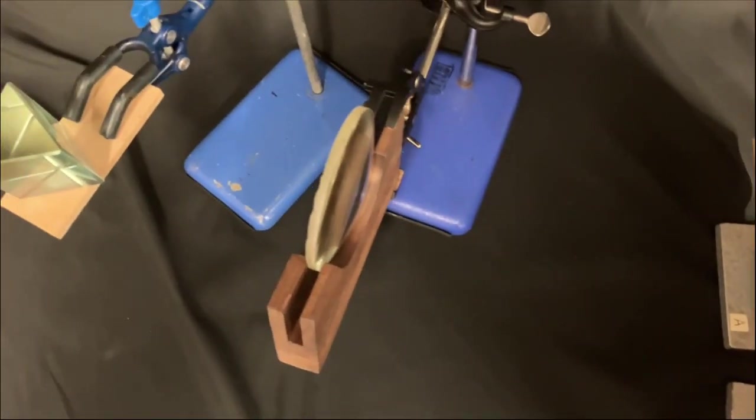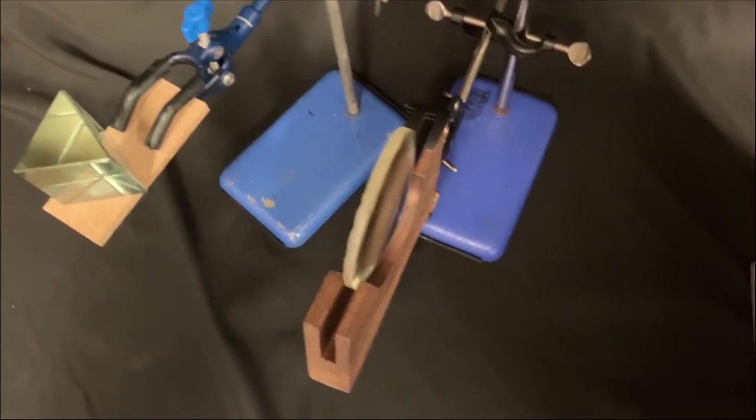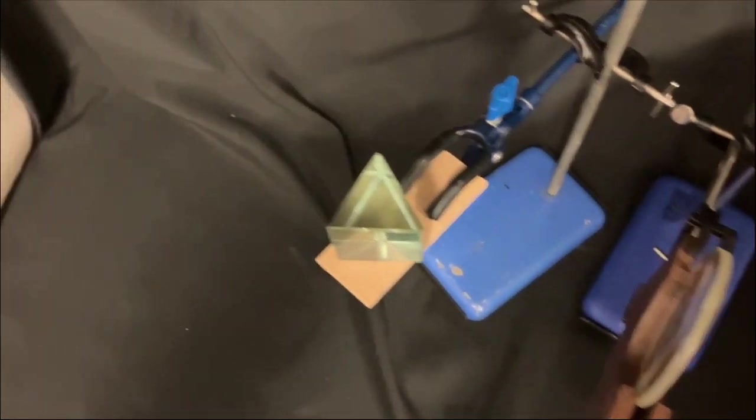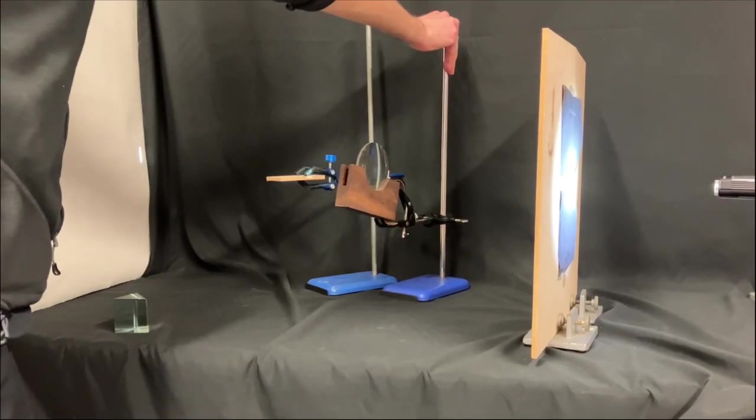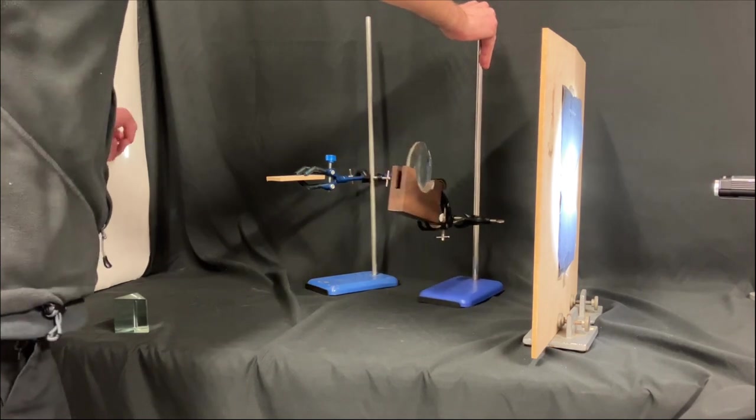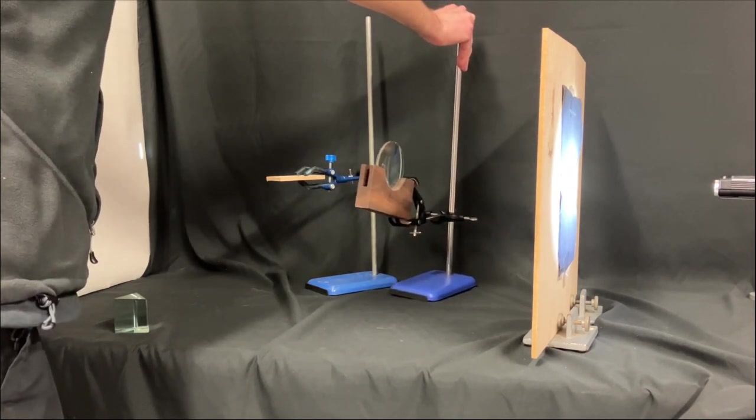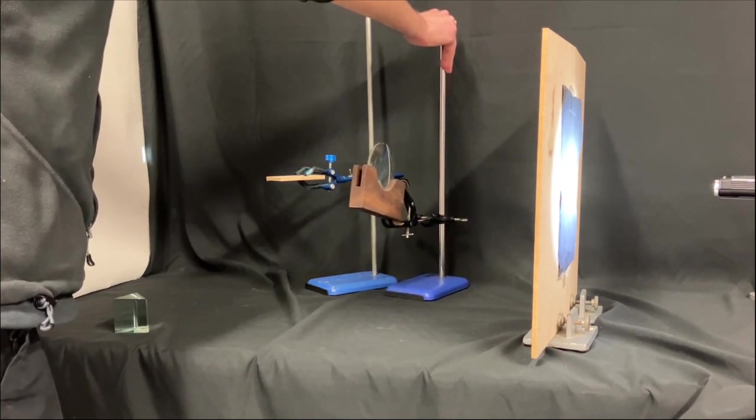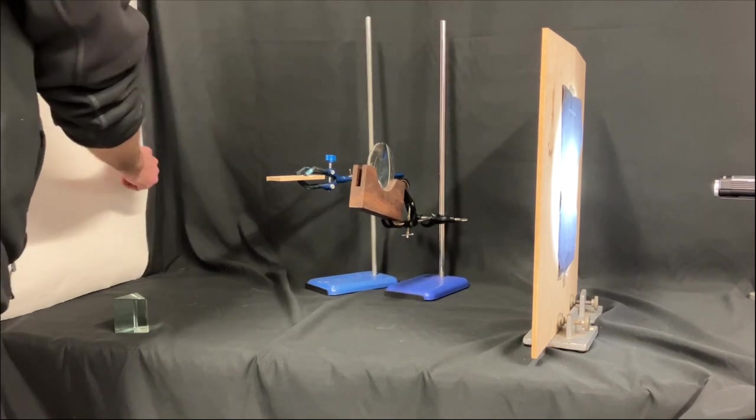Then we have got a lens and then we've got our prism going out onto our white screen at the far end. We adjust the position of the lens so that we get a nice sharp image of the white slit up on the screen.